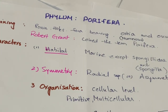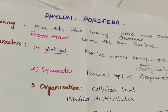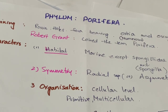An osculum is present — a larger pore which is present at the tip of the sponge. As the water enters through the ostia, it goes through the canals of the animal and exits through the large pore known as osculum. Oscula are fewer in number.